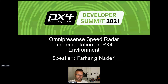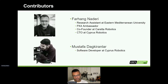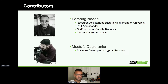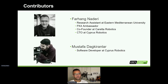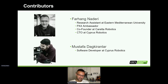My name is Farhang. A little brief about me: currently I'm a research assistant at Eastern Mediterranean University, doing my master's in electrical and electronics engineering. My research interests are EKF, automation and control, in addition to deep learning and artificial intelligence. I'm also co-founder of Character Robotics, which works on underwater automated vehicles, and I'm CTO at Cyprus Robotics where we make autonomous robots.